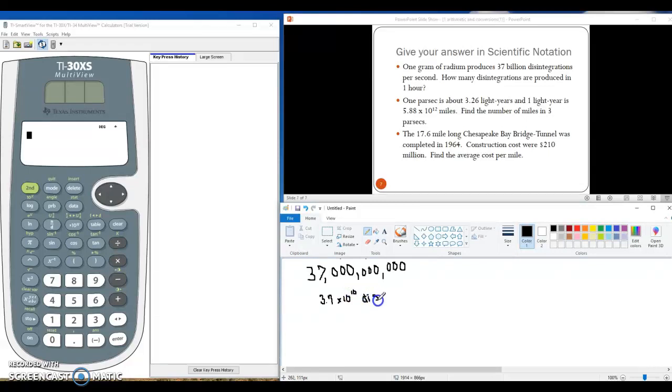That's how many disintegrations happen per second. We're to convert this to disintegrations per hour, so we'll use our dimensional analysis. I have to put the label of seconds up top, so cancel, and I know that there are 60 seconds to 1 minute. So, I can cancel the label of seconds. Then, I can cancel the label of minutes, because I know that there are 60 minutes to 1 hour. And so, the label of minutes cancels, and I have left as my labels disintegrations per hour.